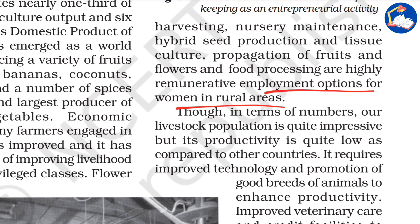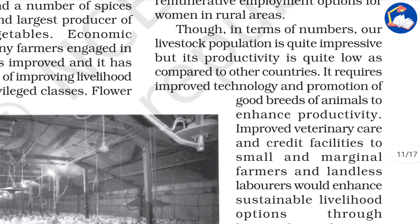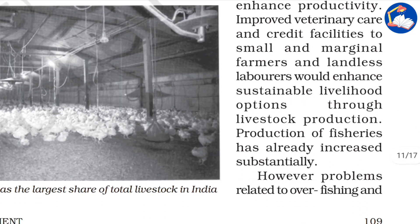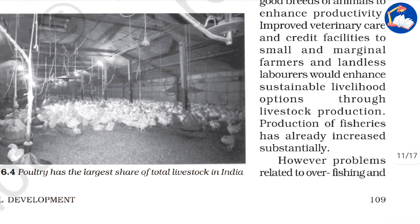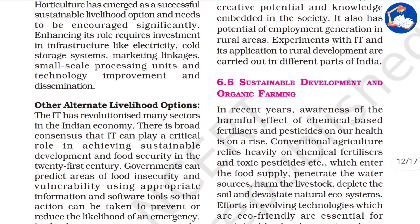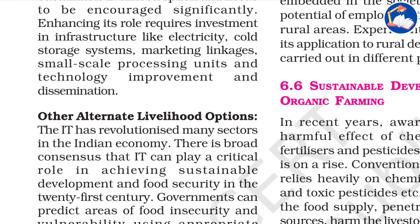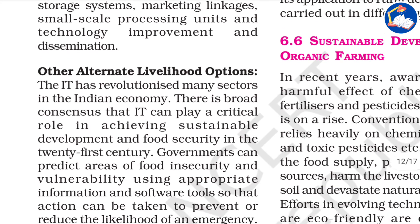Harvesting, nursery maintenance, hybrid seed production, tissue culture, propagation of fruits and flowers, and food processing are highly rewarding employment options for women in rural areas. In terms of numbers, India's livestock population is quite impressive, but its productivity is quite low compared to other countries. It requires improved technology, promotion of good breeds of animals, improved veterinary care, and credit facilities to small and marginal farmers. There are also environmental issues like overfishing and use of fertilizers causing eutrophication of water resources.